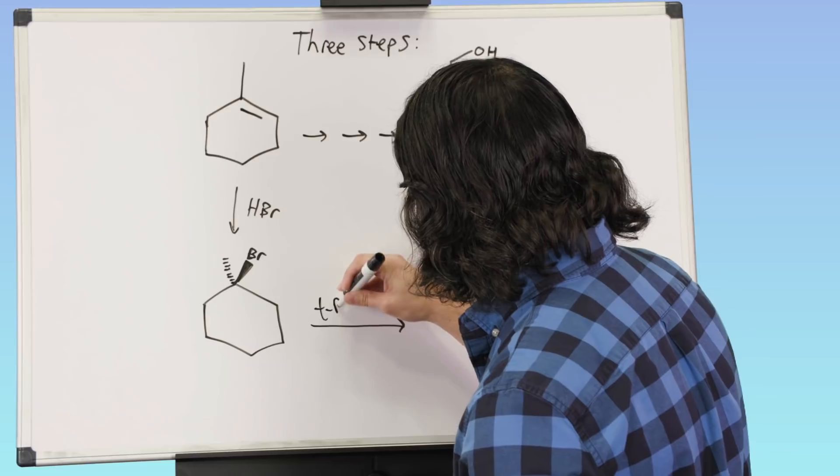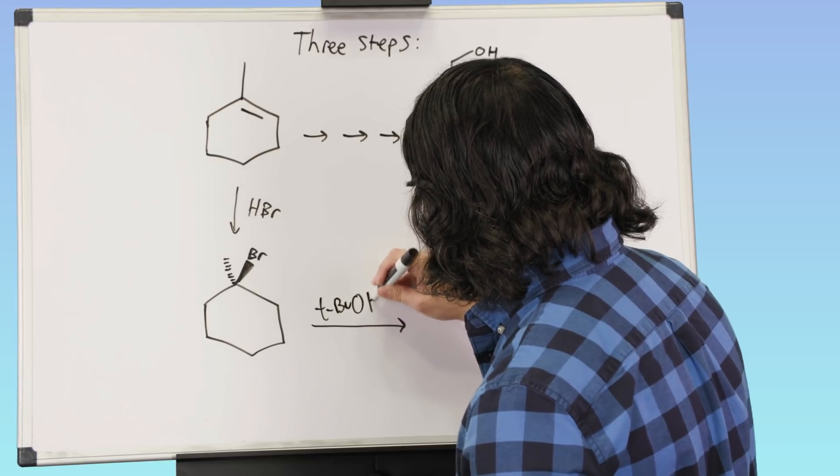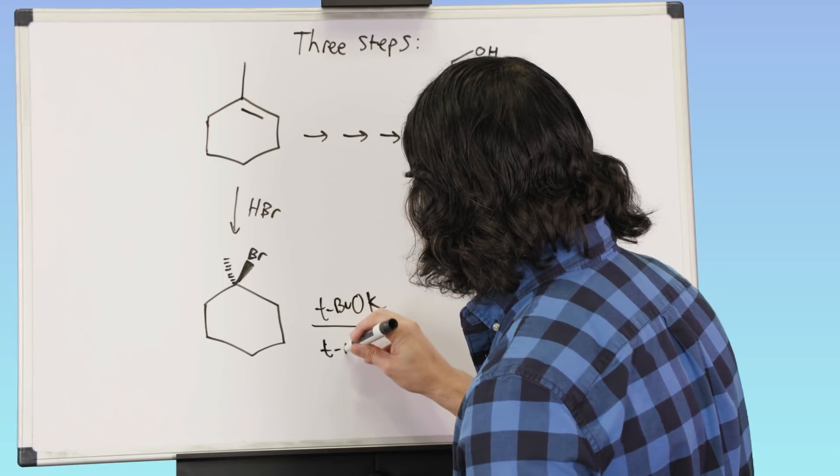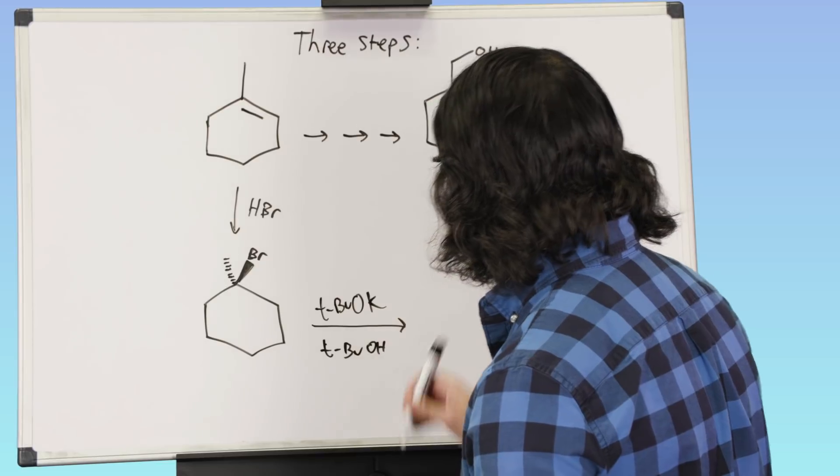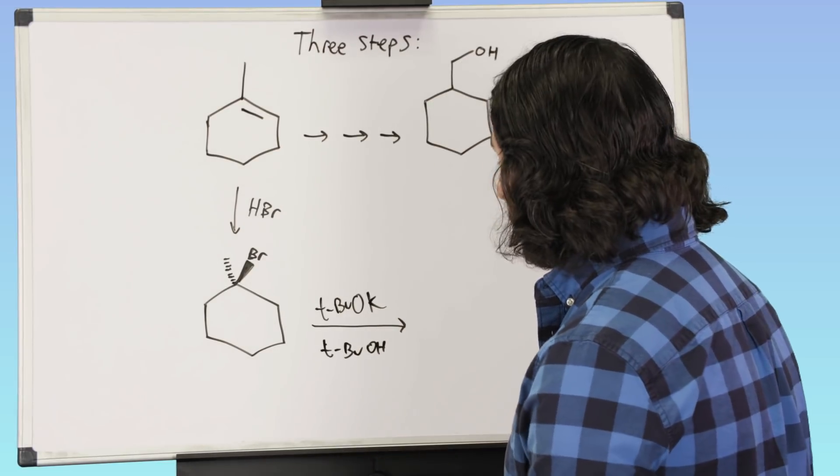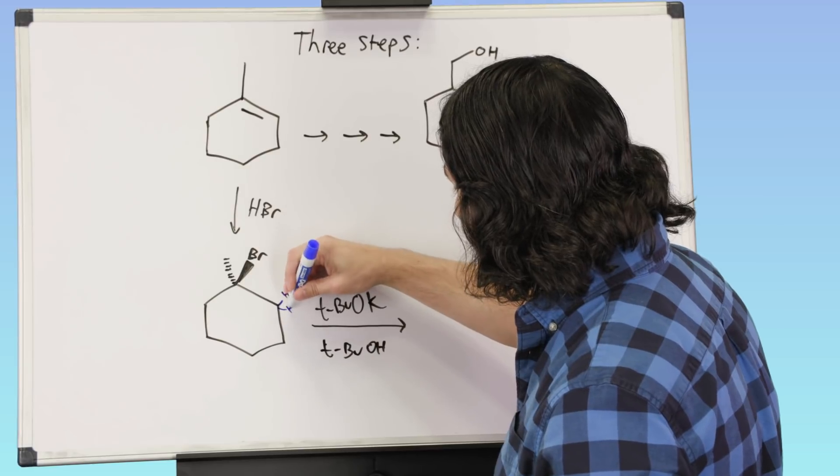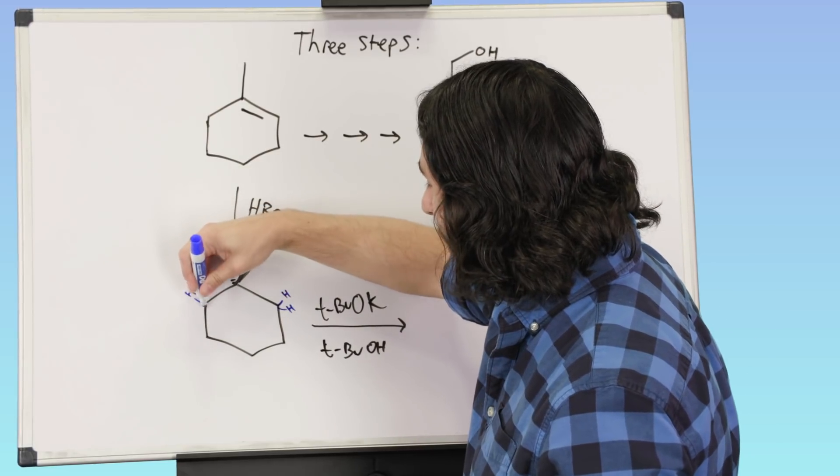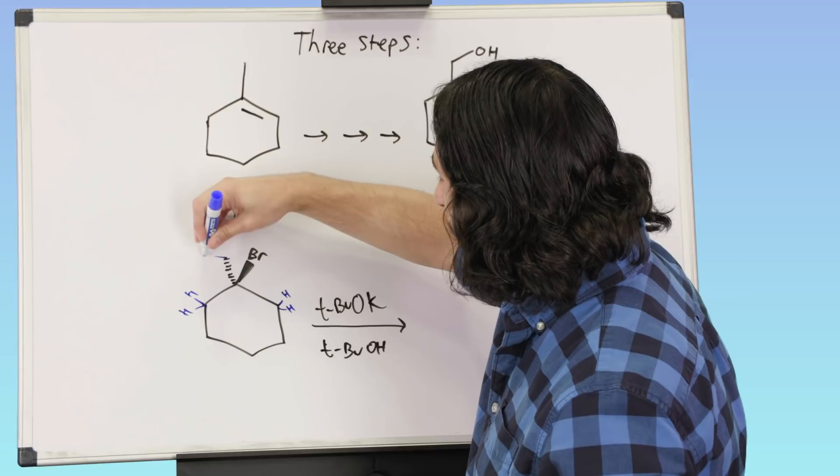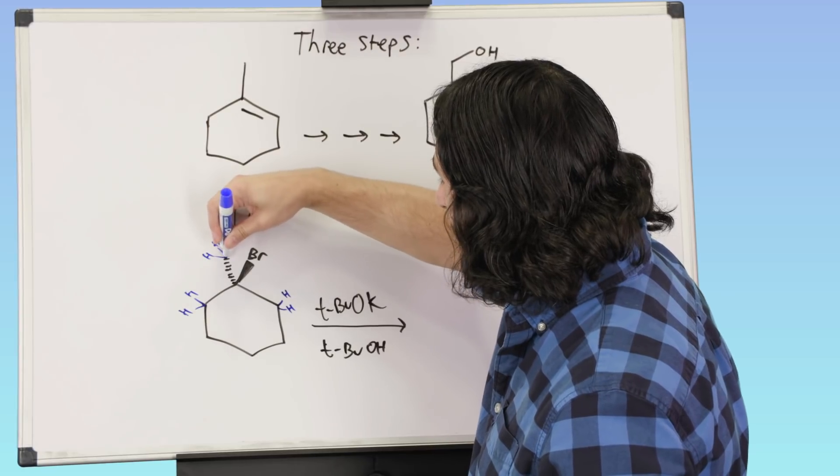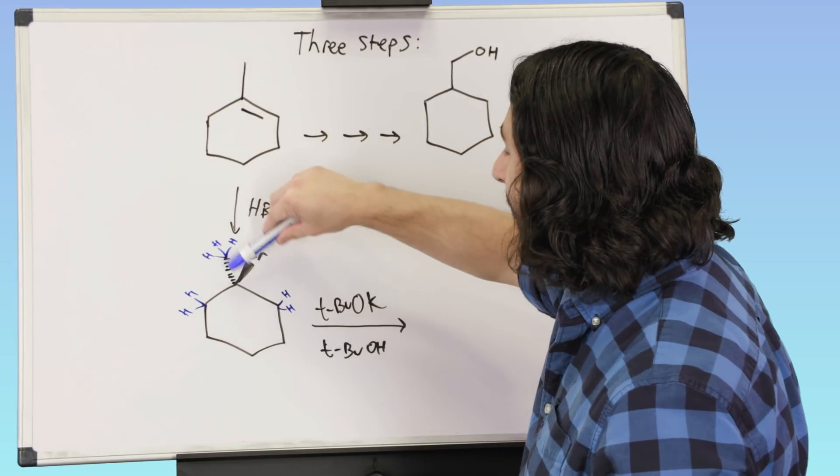So let's say we use tert-butoxide, and maybe we would run that in tert-butanol, and so the reason that we're going to want to do that is this. We've got some protons here, we've got beta protons there, we've got beta protons there, we've got beta protons here, but if we're trying to get that pi bond there, then we're going to need to use, this has got to be kinetically controlled.